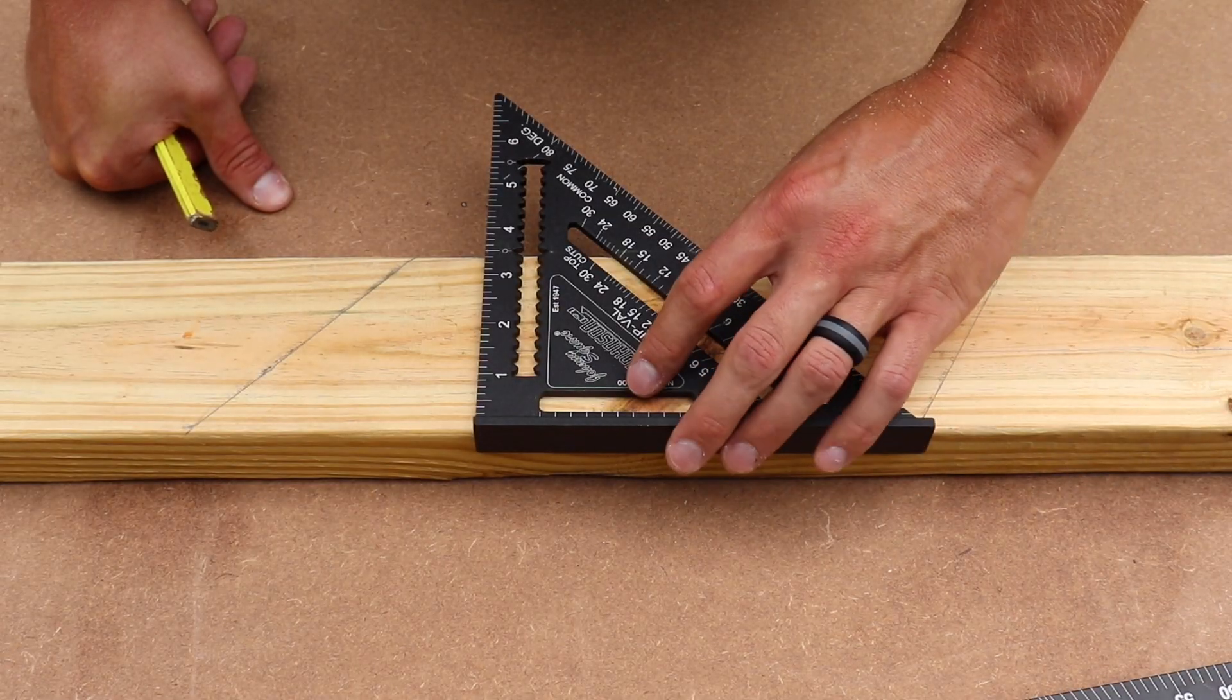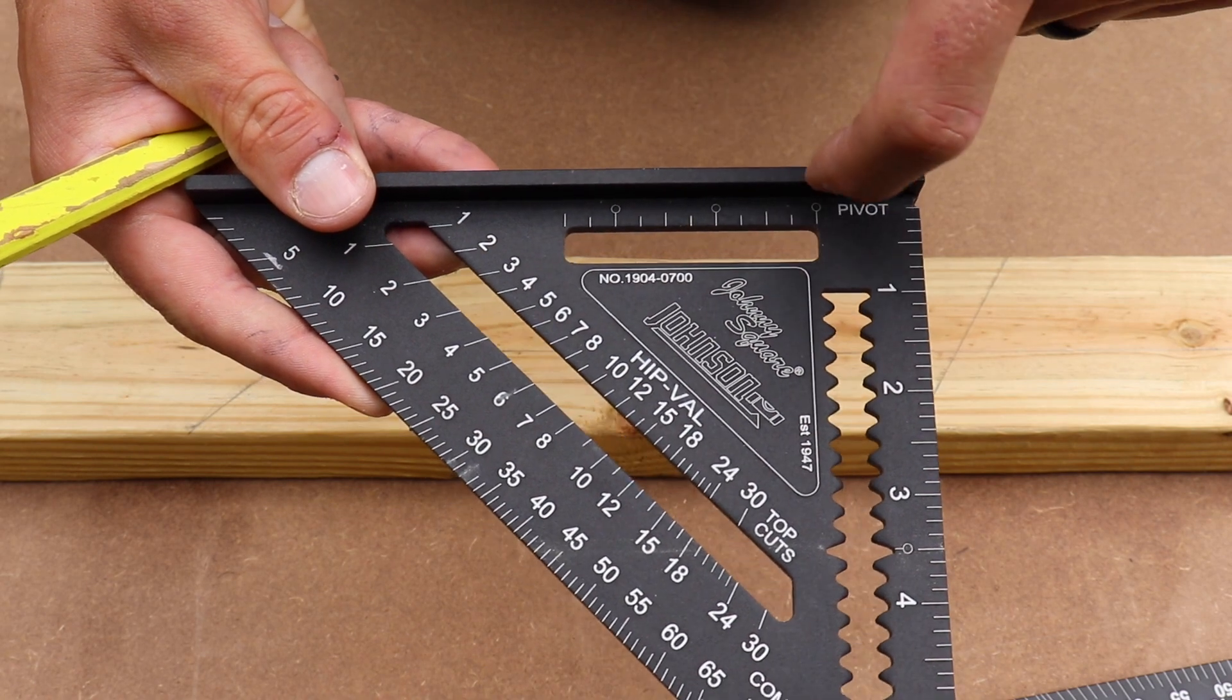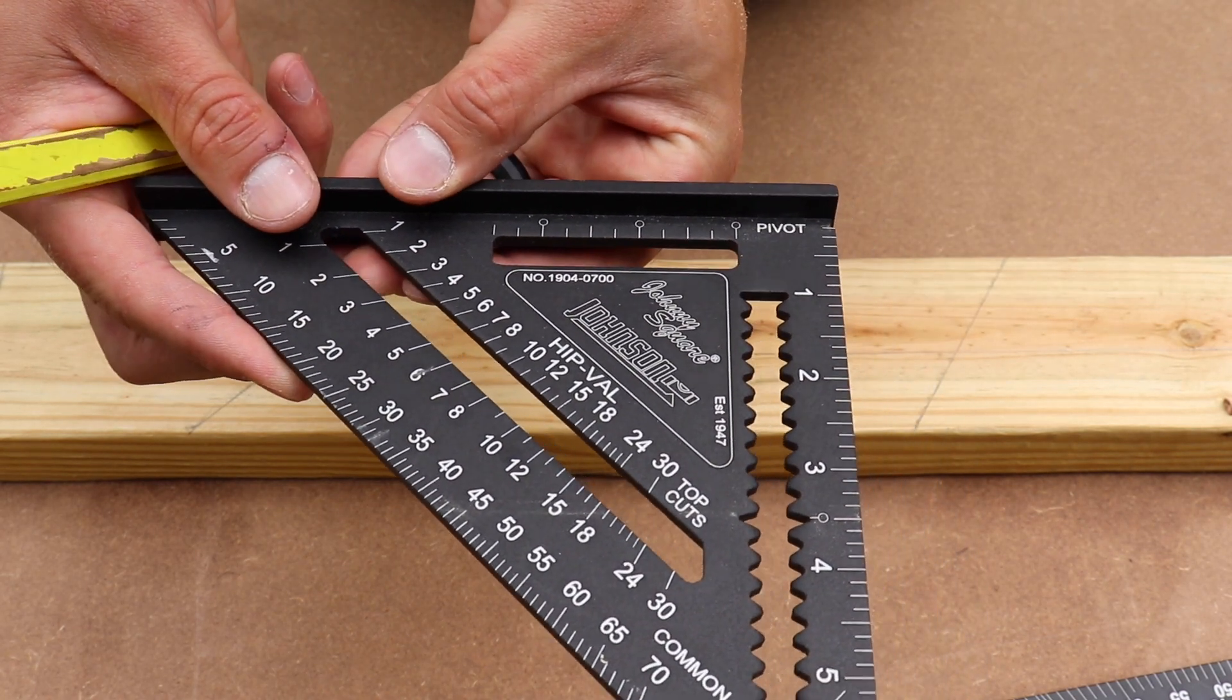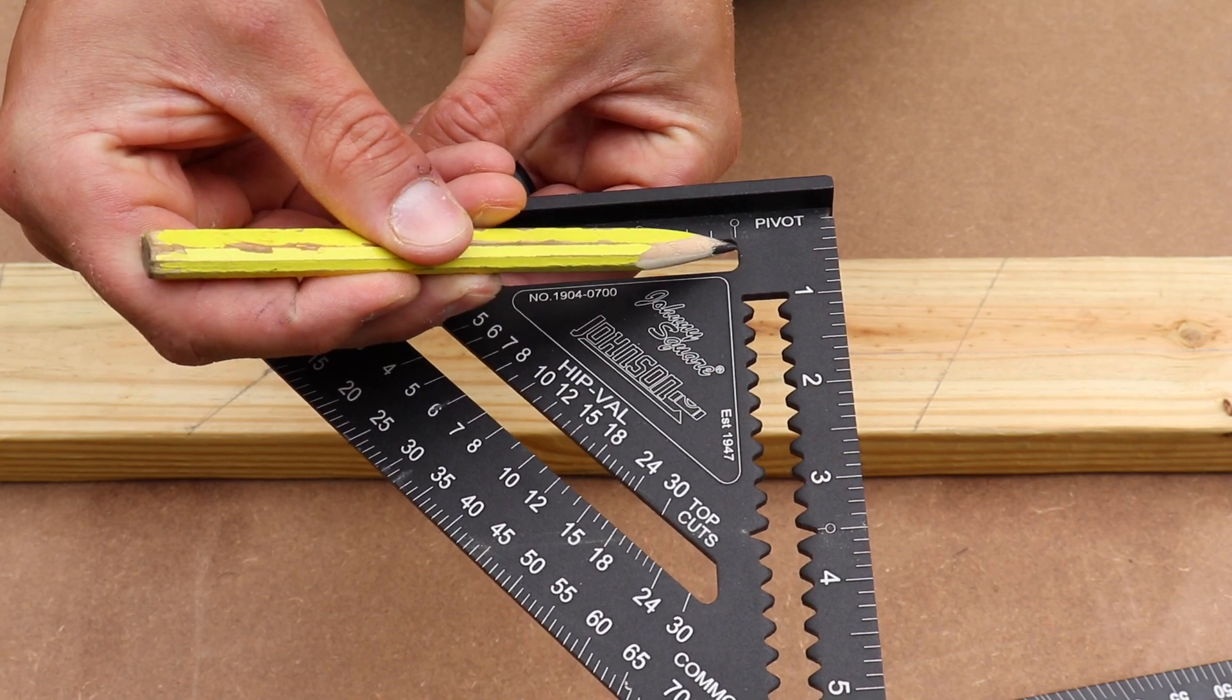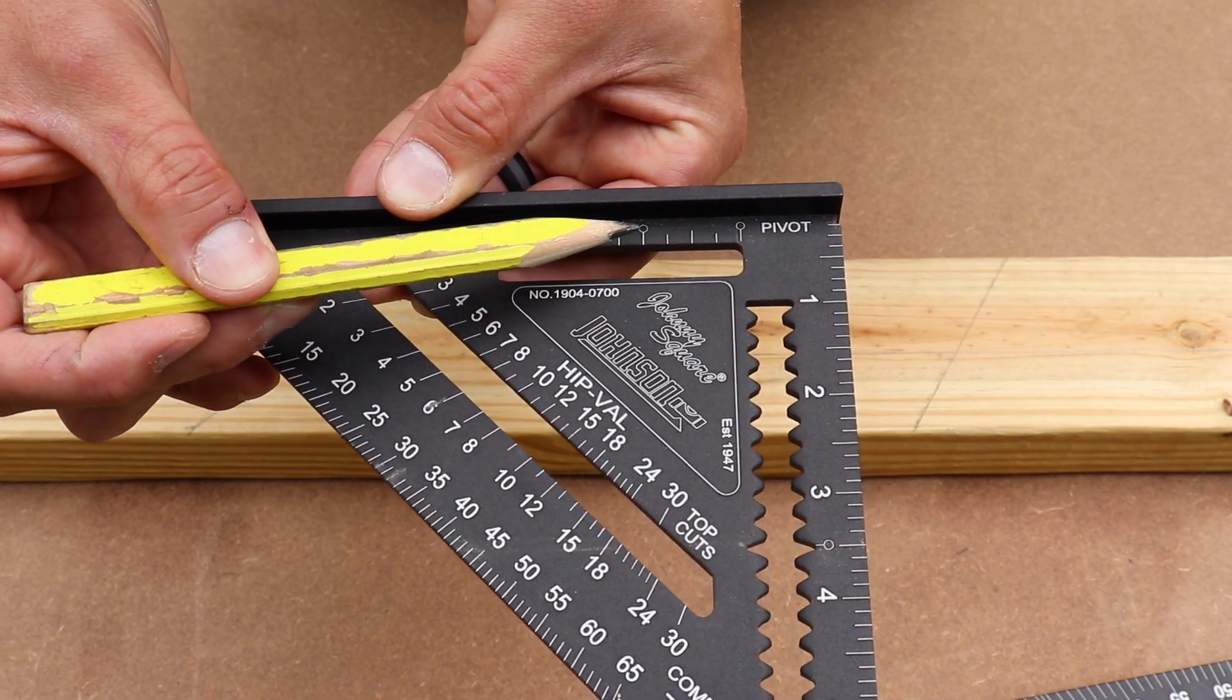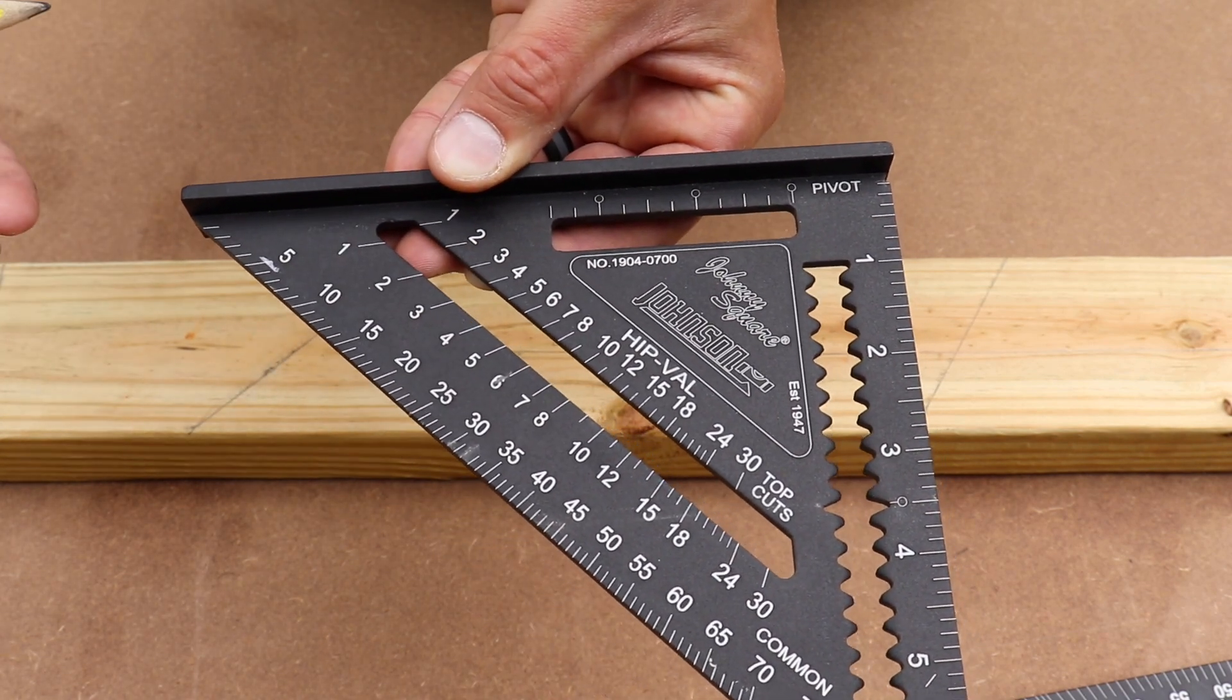Now, another cool feature of the speed square is this ruler right here. And that's stepped off in quarter inch increments. So from the edge of your speed square to that spot right there, that circle, that's one inch. You have an inch and a quarter, inch and a half, inch and three quarter, two inches, and so on. And so this is really helpful when you're laying something out.